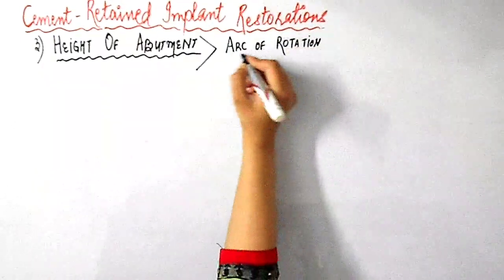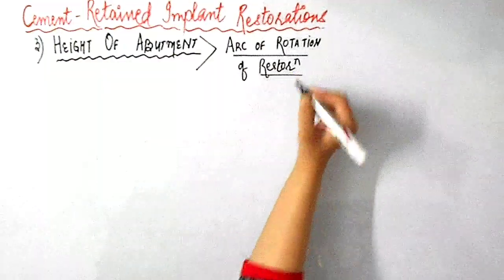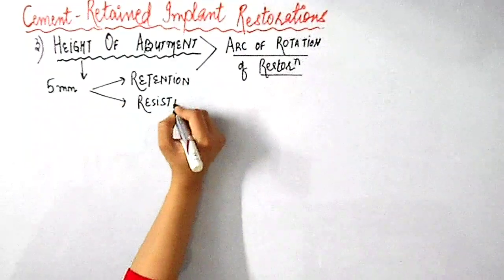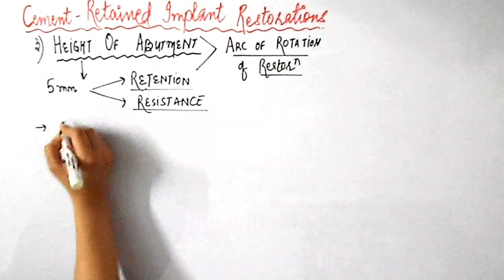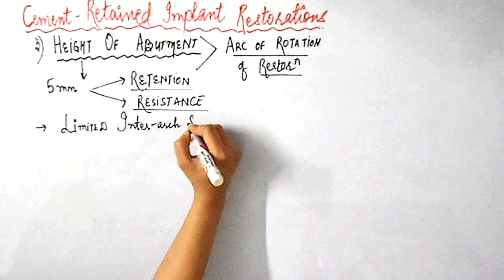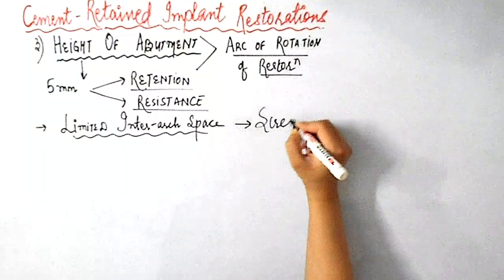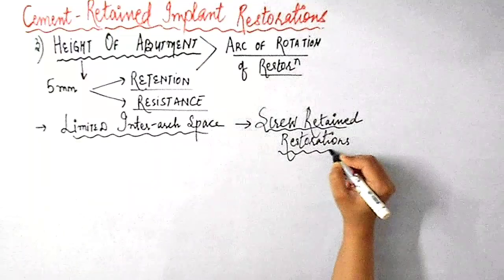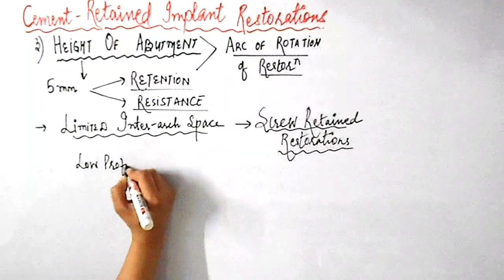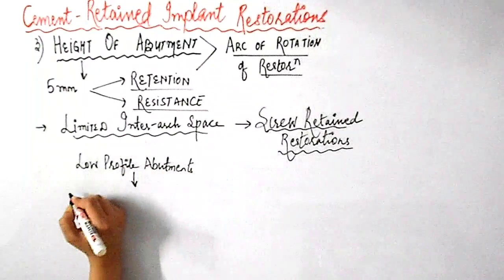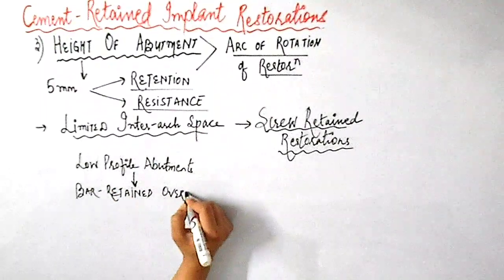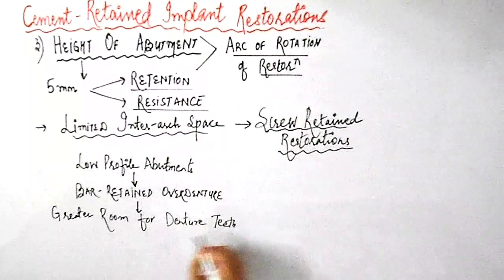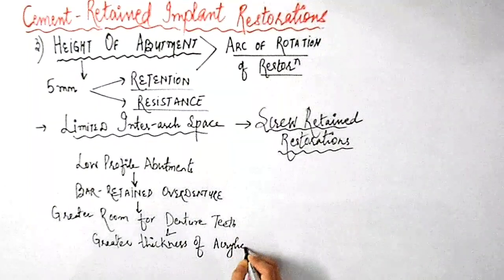To prevent dislodgement of cemented restorations, the length of the abutment should be great enough to interfere with the arc of rotation. At least five millimeters of abutment height is needed for proper retention and resistance of cement retained crowns. In clinical situations where there is limited inter-arch space requiring an abutment shorter than five millimeters, screw retained restorations are indicated. Low-profile abutments are advantageous for bar-retained overdenture applications, as the lower height of the screw retained bar offers greater room for denture teeth and greater thickness of acrylic, which is needed for the strength of the restoration.